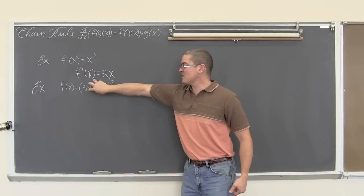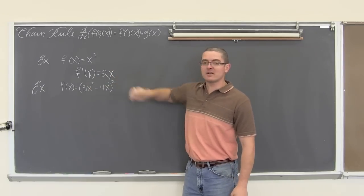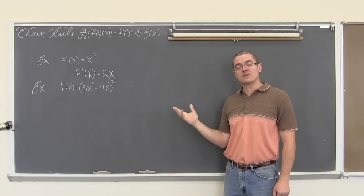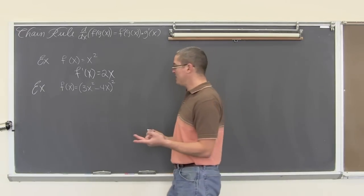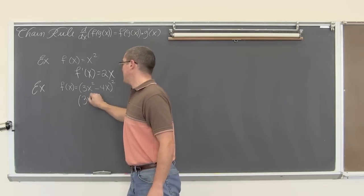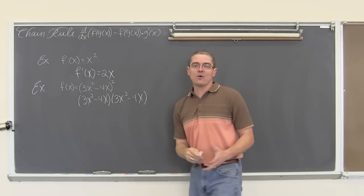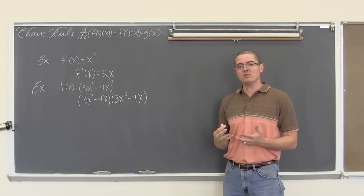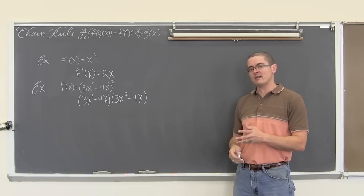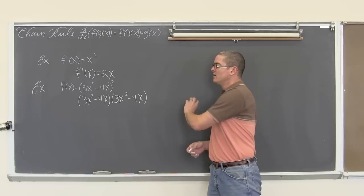Whereas the second one here, I have something going on inside the squared function. So this is a function inside of another function — we have not had that before. If I were to find the derivative of this without using the chain rule, I would have two options. One is that this binomial is being squared. So I can write 3x squared minus 4x times 3x squared minus 4x. I want to match the format of the answer I am going to get when I use the chain rule, so I am going to use the product rule to find this derivative.